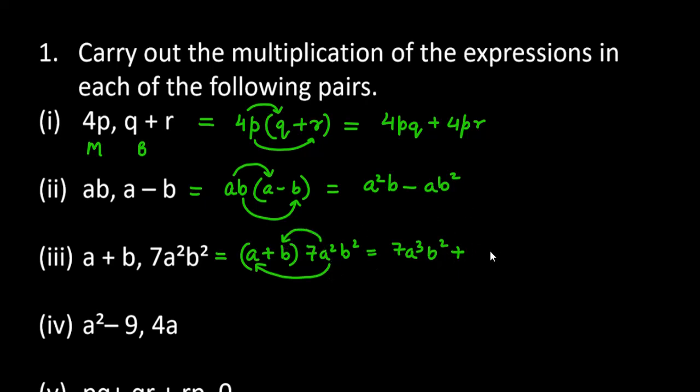Now the fourth one we have is a squared minus 9 in bracket, we have 4a after this. So you have to multiply 4a with a squared, so it will be 4a cubed. Then you have to multiply 4a with 9, so it will be minus 36a. So this is your answer for the fourth part.